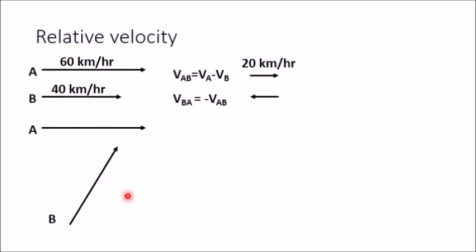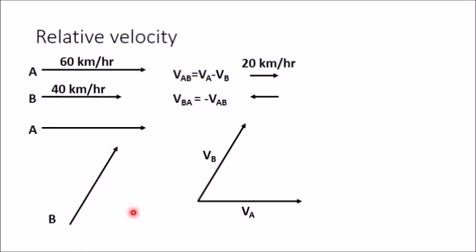To do that, first draw one vector — I have drawn VA first. From the same start point, draw another vector VB. Now join these two end points — that will be your relative velocity.